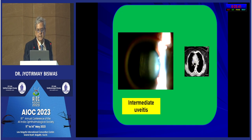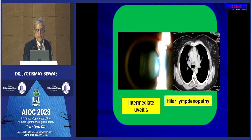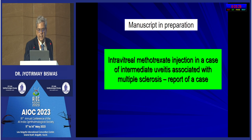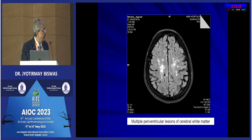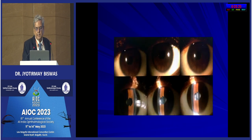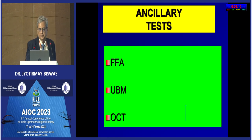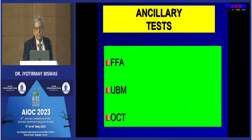Another case of uveitis showed bilateral intermediate uveitis with bilateral hilar lymphadenopathy. We also reported a case of intermediate uveitis associated with multiple sclerosis with multiple periventricular lesions in the cerebral white matter. The patient had spillover anterior uveitis and the vitreous cavity showed exudates and vitreous haze. For ancillary tests, I routinely do OCT in the majority of cases where foveal reflex is dull.